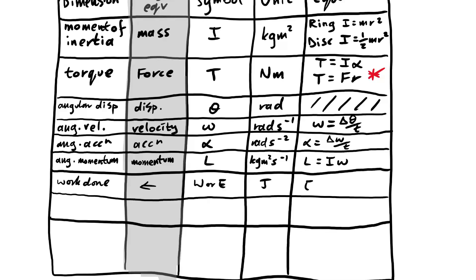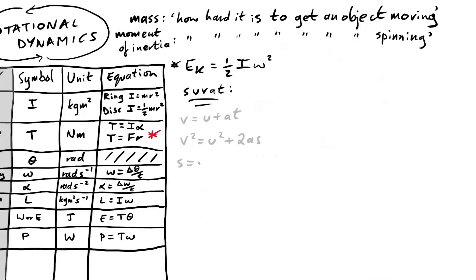Work done is also a thing in rotational. It's still joules. If it's force times distance for linear, then it's torque times angular displacement for rotational. So T theta. Power, similarly, we just take the work done equation, divide by time, and so we end up with T omega instead.